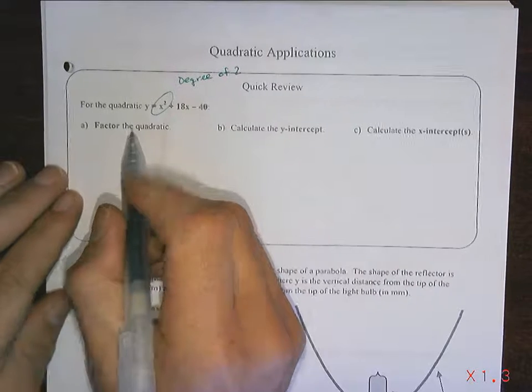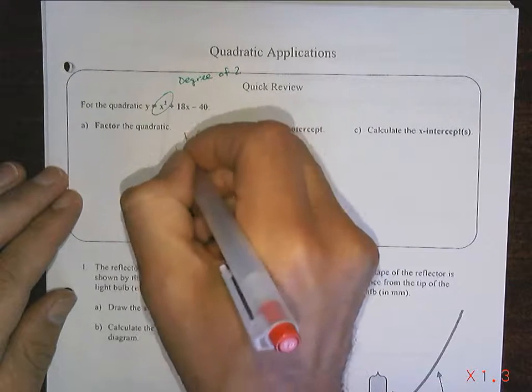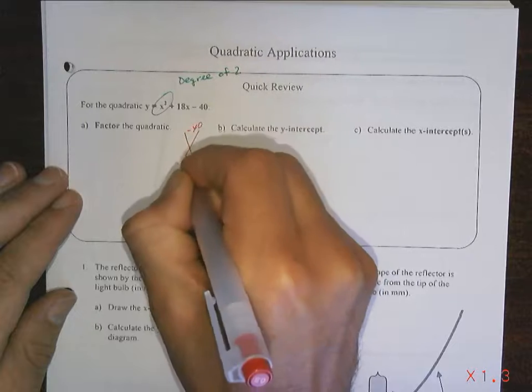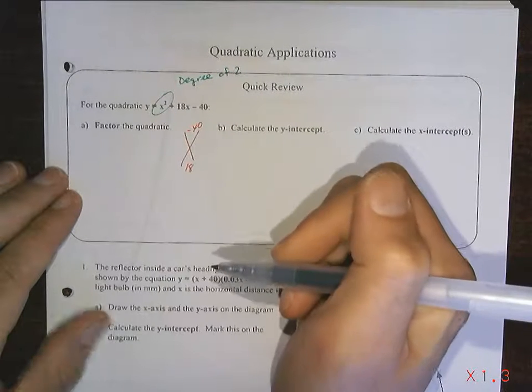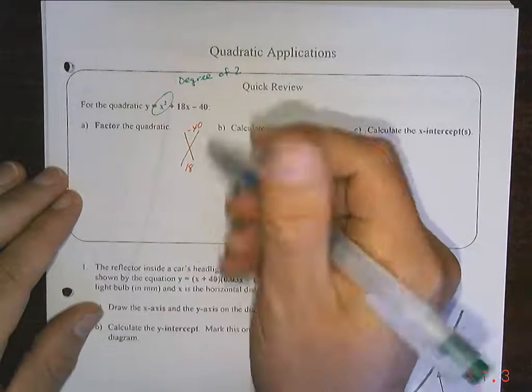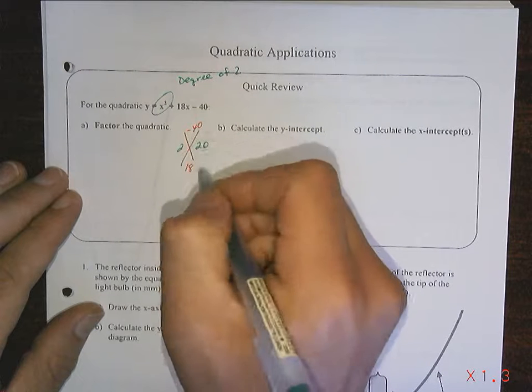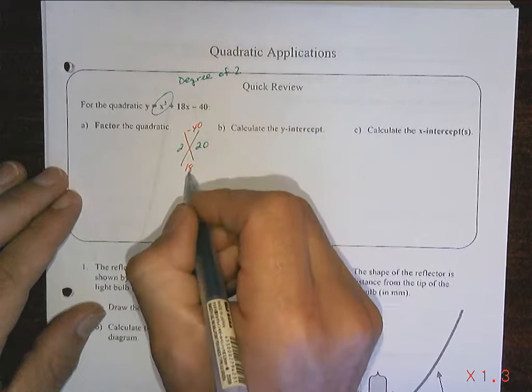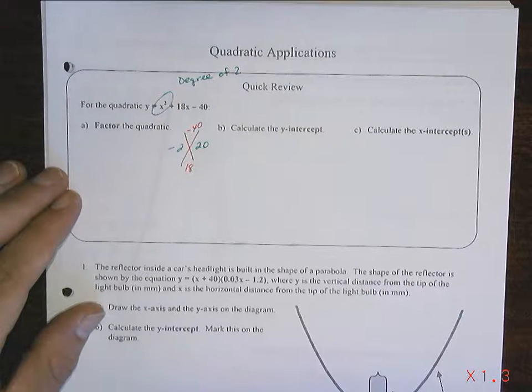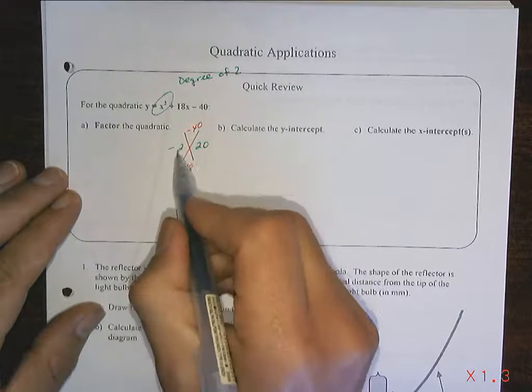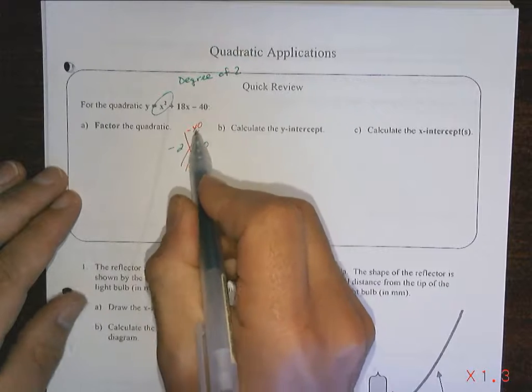So we're going to factor the quadratic. You should be experts at factoring at this point. What I taught you was we're going to do this: we put the negative 40 on top, we put the 18 in the bottom. We're looking for two numbers that multiply to give 40, add to give 18. Well, if I think about it, I'm thinking about 2 and 20. They have to multiply to give a negative, which means one's positive, one's negative. They add to give a positive, which means the larger one needs to stay positive. It's going to be negative 2. Let's see if it works.